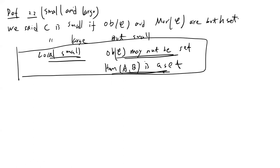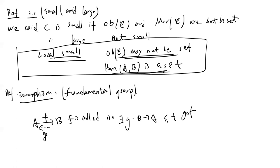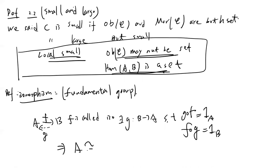Another important definition is isomorphism. If you learn algebra or topology you will encounter the fundamental group, which connects to this idea. A morphism f from A to B is called an isomorphism if you can find another morphism g from B to A such that g∘f equals the identity on A, and f∘g equals the identity on B. We write A is isomorphic to B using the symbol ≅.